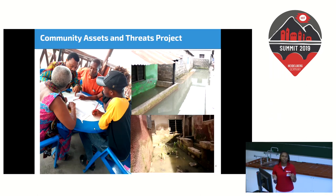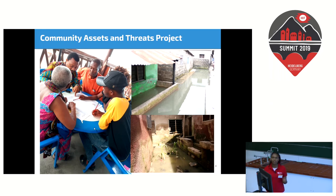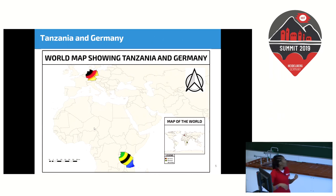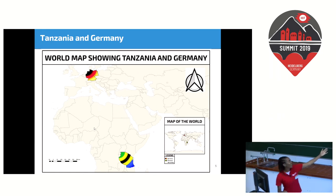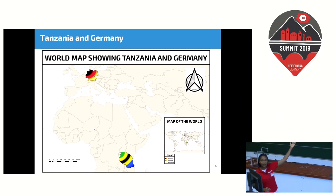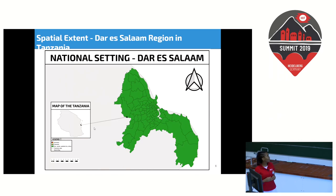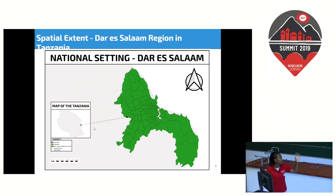The Community Asset and Threat Project was conducted under Dar Ramani Huria and involved community members to identify points of interest affected or not affected by floods, and also evacuation centers used when flooding occurs. For context, Tanzania is in East Africa, and we are currently in Germany. Dar es Salaam is found in the east of Tanzania — a small but very developed part of the country, also affected by floods.